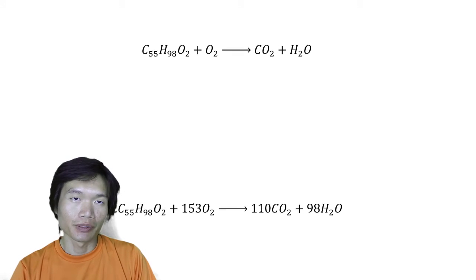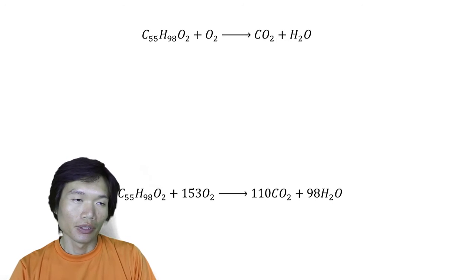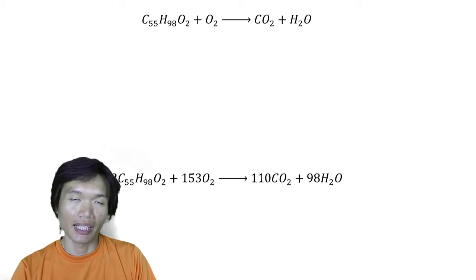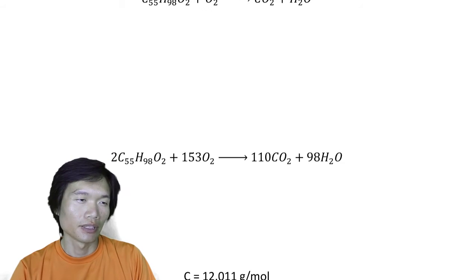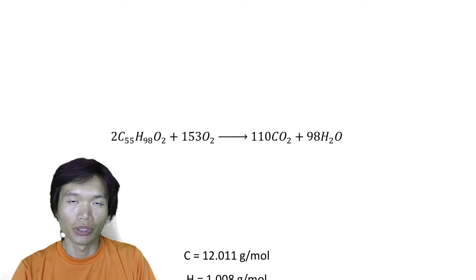Triglyceride plus oxygen becomes CO2 and H2O. It's like when we burn fat, we need to breathe in oxygen and then, as they say, we exhale carbon dioxide and we produce water and heat as energy. So after we balance out the equation, we have 2 triglyceride, we need 153 O2, and we produce 110 CO2 plus 98 H2O.